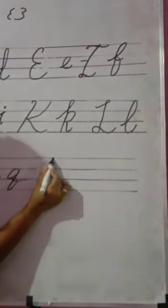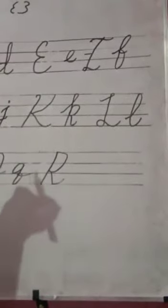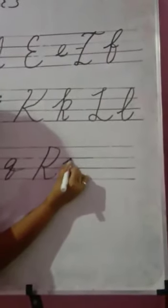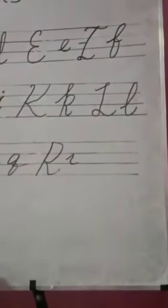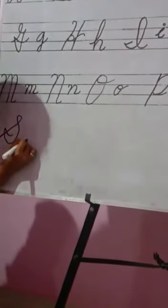Then R. Make a slant line. Write like this. And give like a curve. Then small r. This is small r. If you feel it difficult, you can write like this also. Okay? Then S. See? Write like this. And give like this. Yes. Then small s.